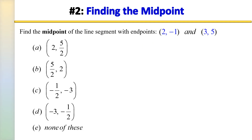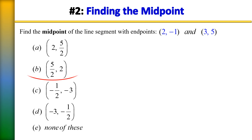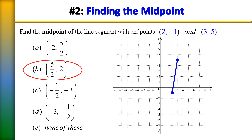In problem number 2, we were asked to find the midpoint of the line segment with endpoints 2 comma negative 1 and 3 comma 5. Recall the midpoint of a line segment is the point on the segment that is equidistant from its endpoints — in other words, the center point. The correct answer is choice B. Let's prove that by drawing the line segment to see if 5 halves comma 2 is indeed the center — and it is, confirming it's the midpoint.